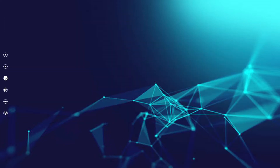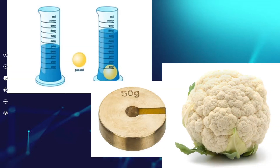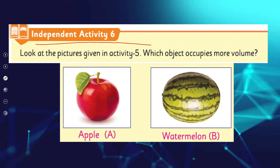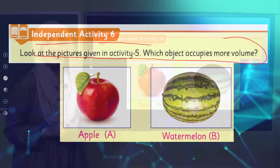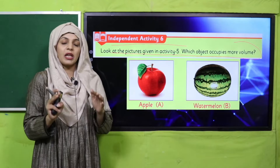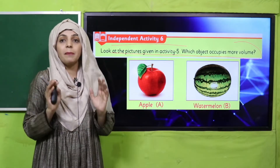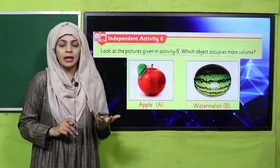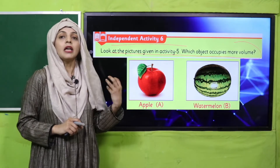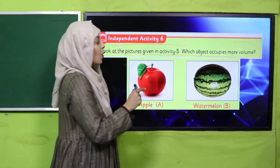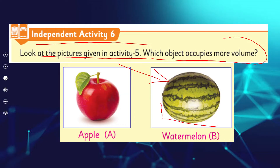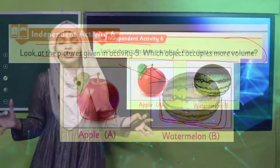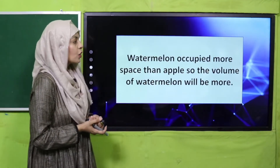Now, independent activity number six: which object occupies more volume? You have two pictures — we did a previous activity where you placed two fruits on a table and determined whose mass was more. We found that the watermelon has more mass. But now comparing both fruits, which has more volume? The watermelon has more volume because it occupies more space, whereas the apple occupies less space.